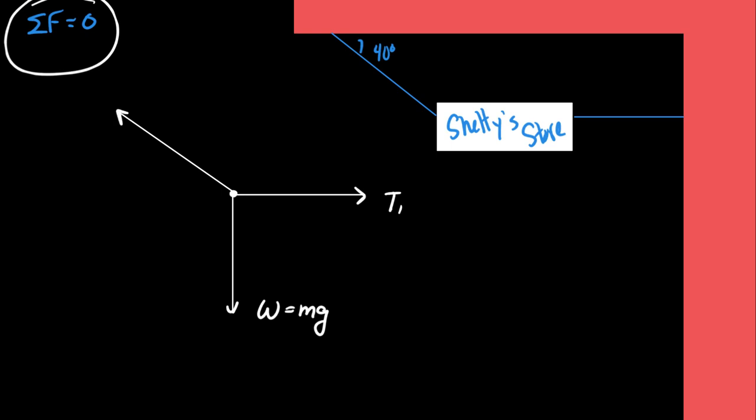Then label it. Now consider if there are any other forces acting in the system — we move on to resistive forces. Is the object trying to slide past some surface? No. So I don't think we have to include friction as one of the forces here. I think this is all you had to draw.